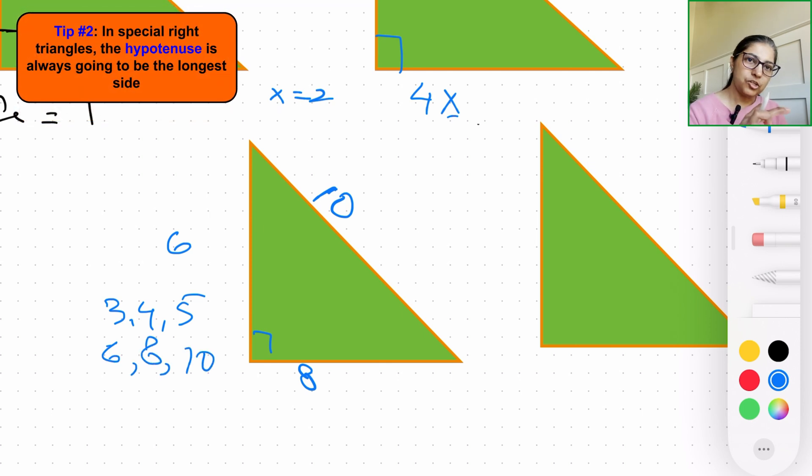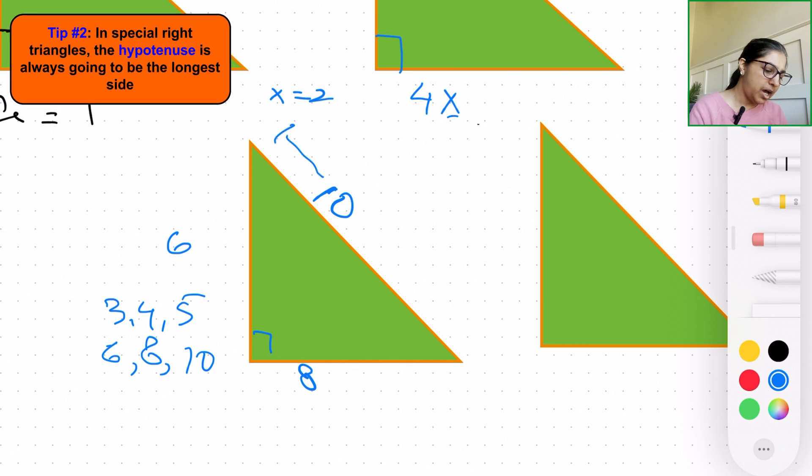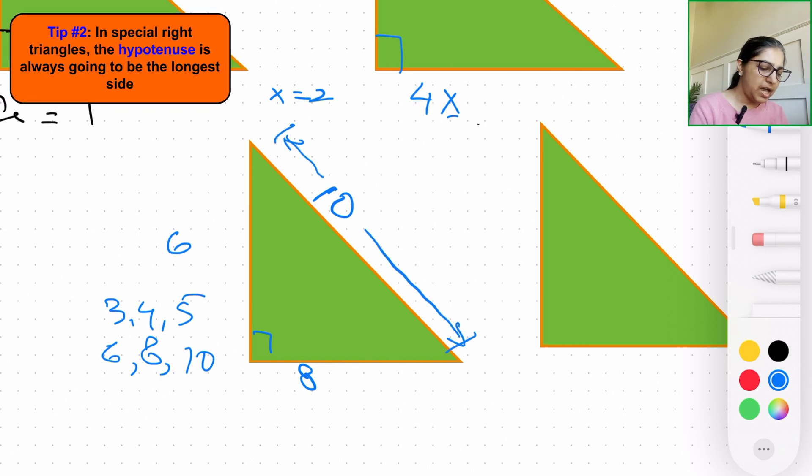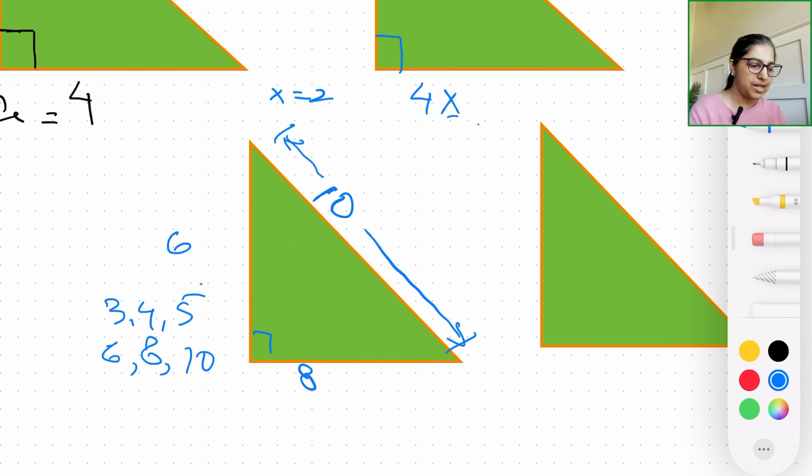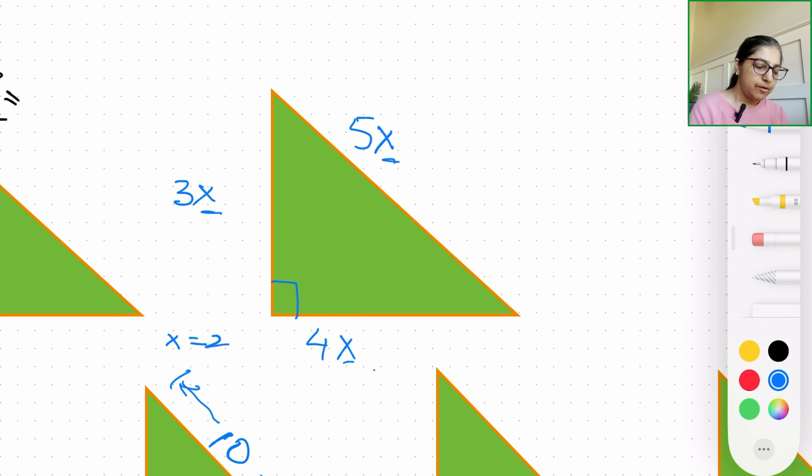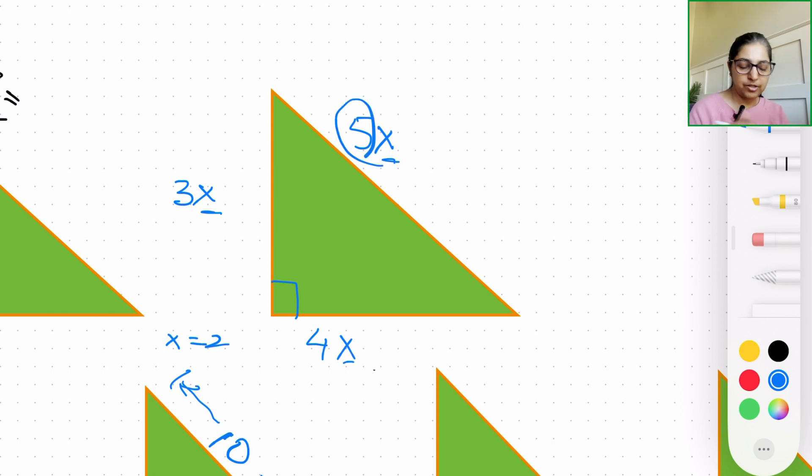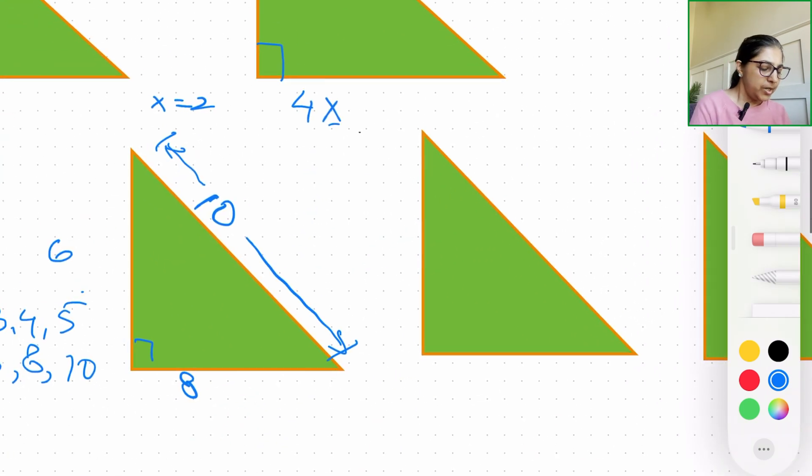And also notice the hypotenuse on the right angle triangle is always going to be the highest measurement. 10 is the highest among 6, 8, and 10. For 3-4-5, 5 is the highest measurement or the dimension.